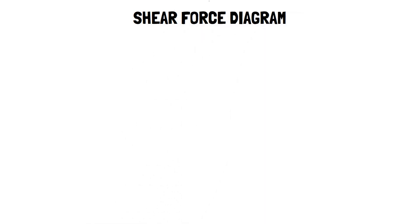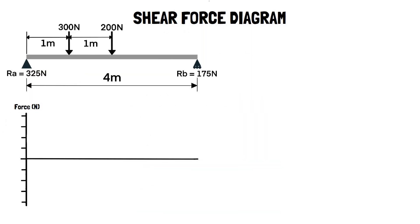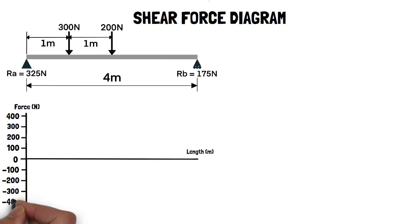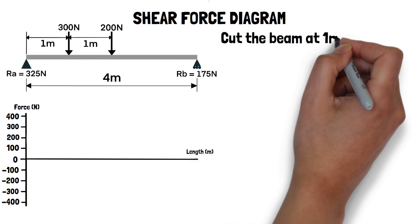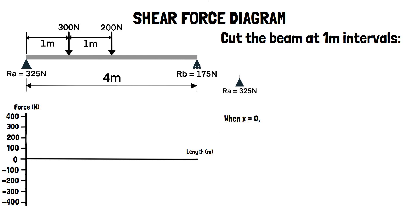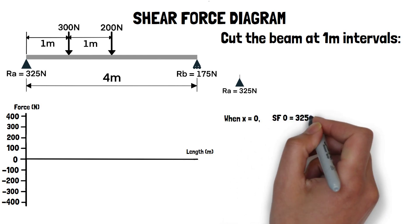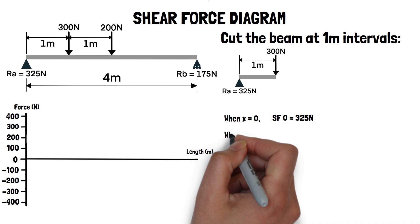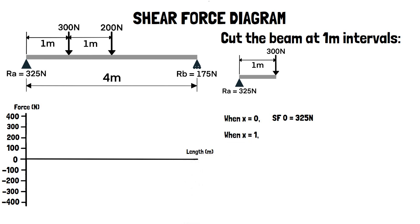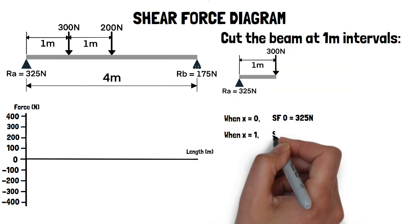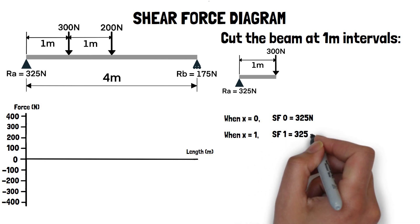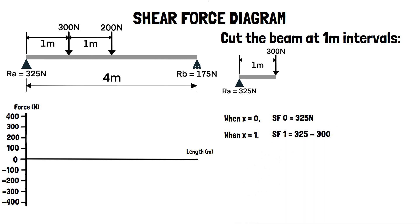We will begin by drawing the shear force diagram. First we need to cut the beam at sections where we want to determine the shear force. In this example we will cut the beam at 1 metre intervals. When x equals zero, the only force acting on the beam is the 325 newton reaction force RA, so the shear force at x equals zero is positive 325 newtons. When x equals 1, we still have the 325 newton reaction force RA, but we now have the introduction of a 300 newton point load in the opposite direction. So the shear force at this point is calculated by 325 minus 300, which equals 25 newtons.